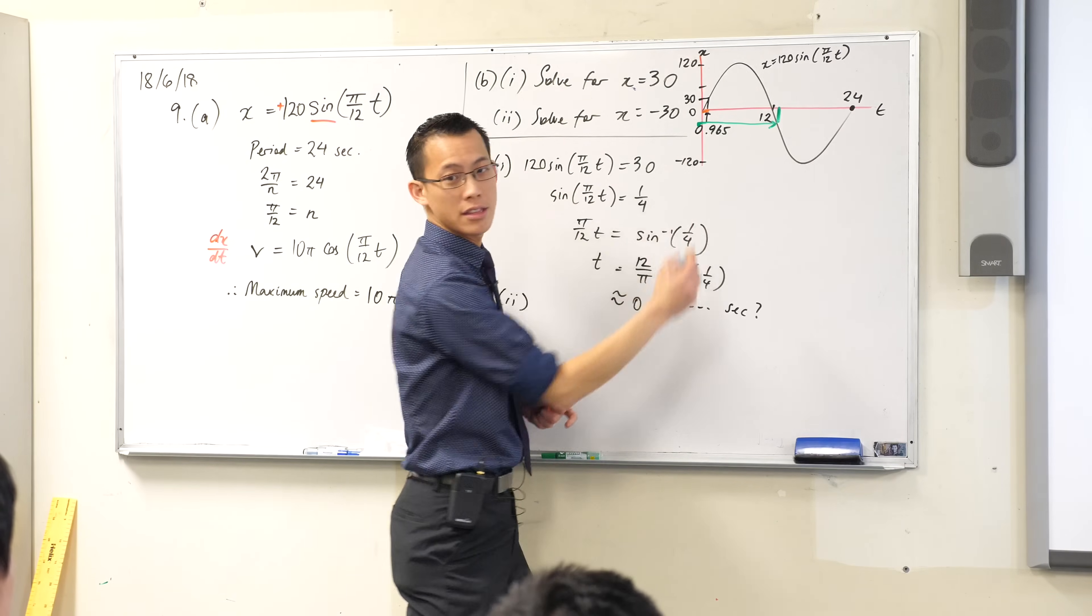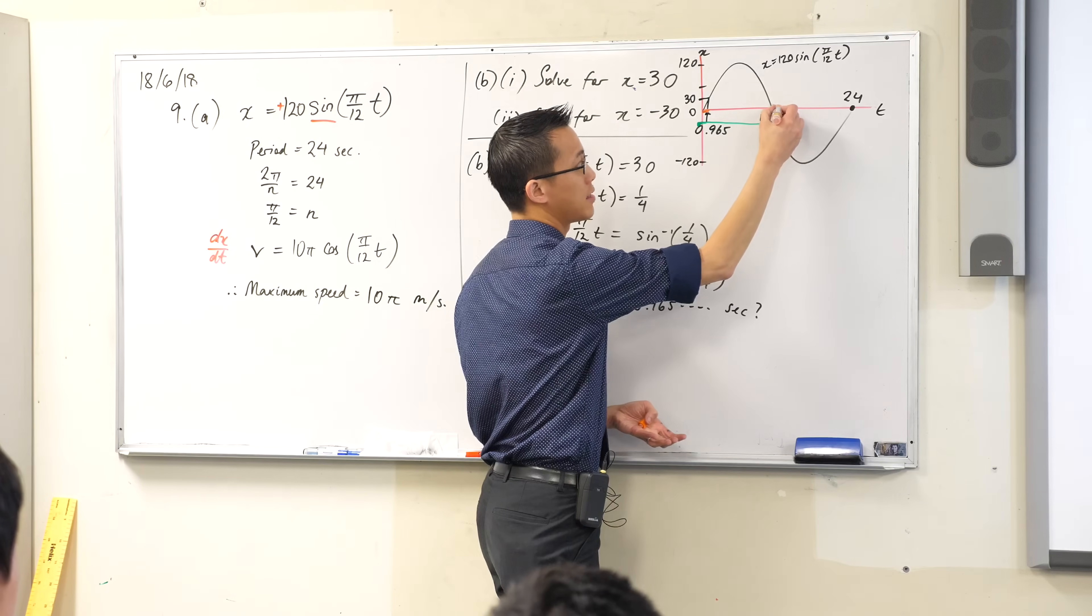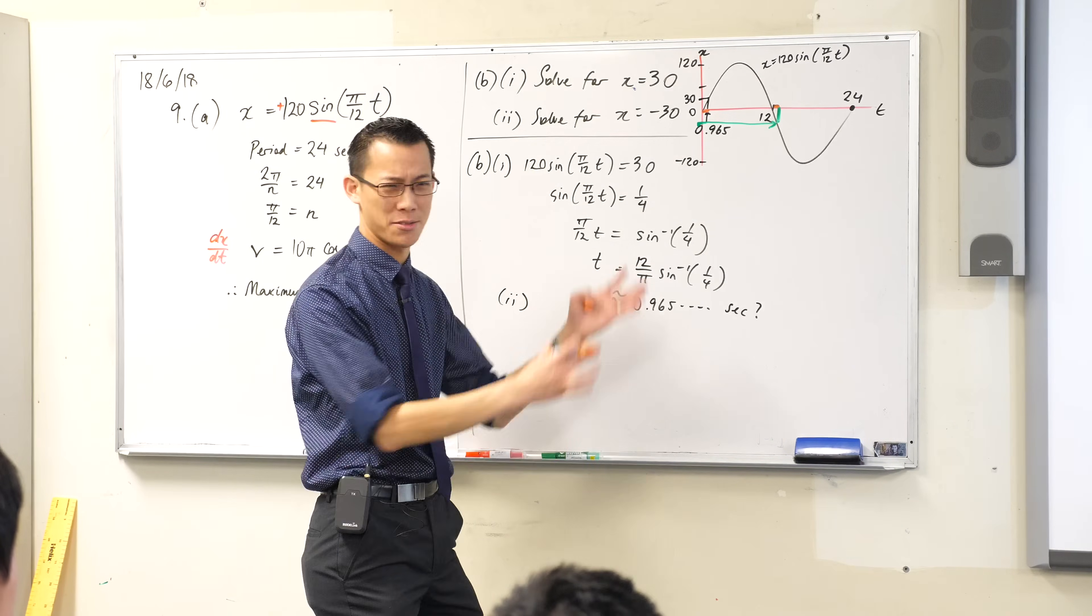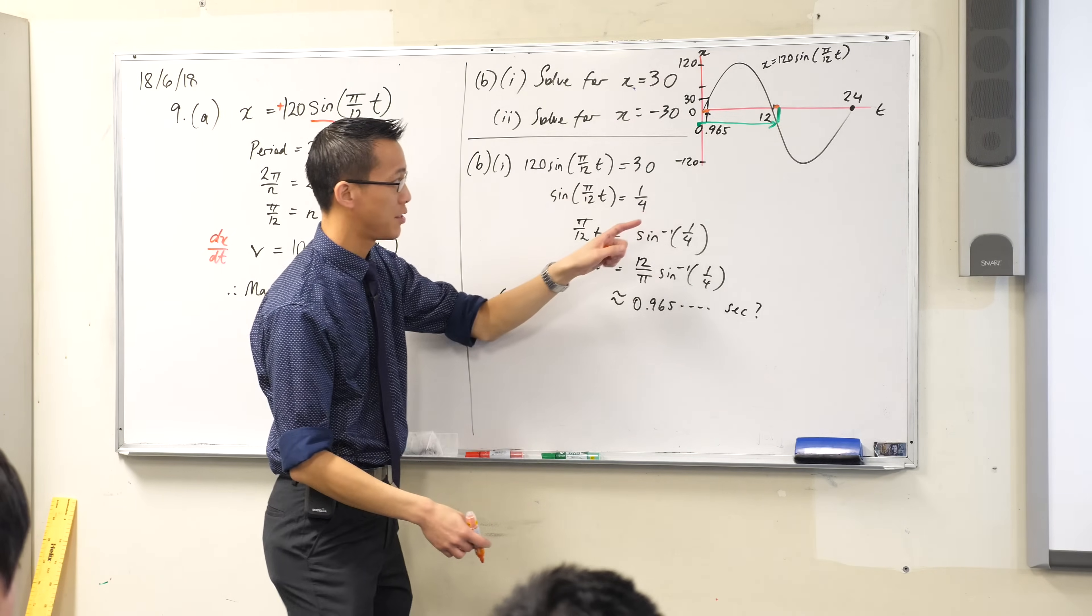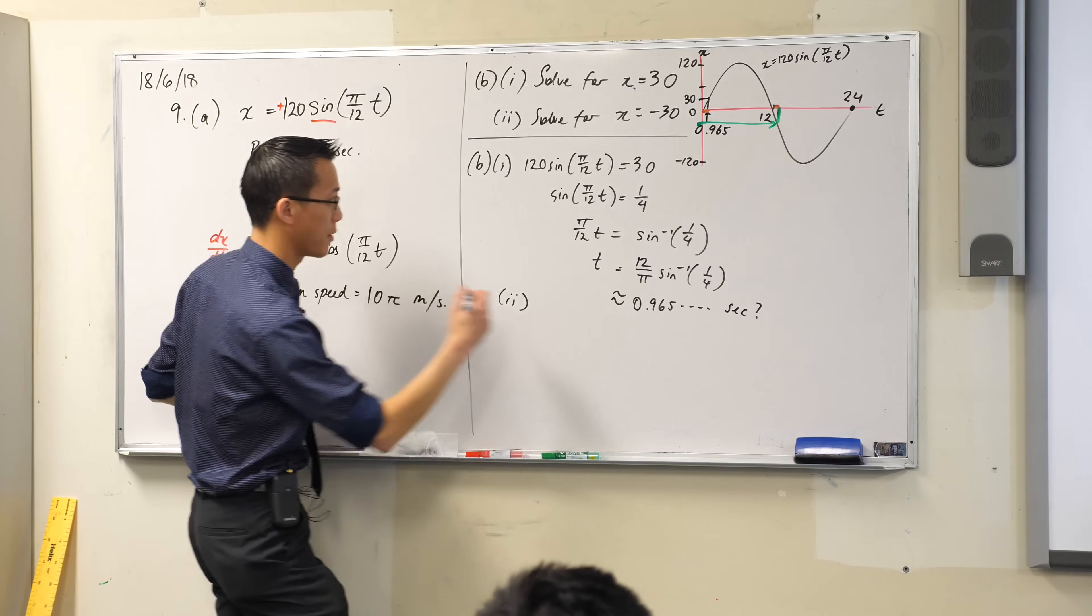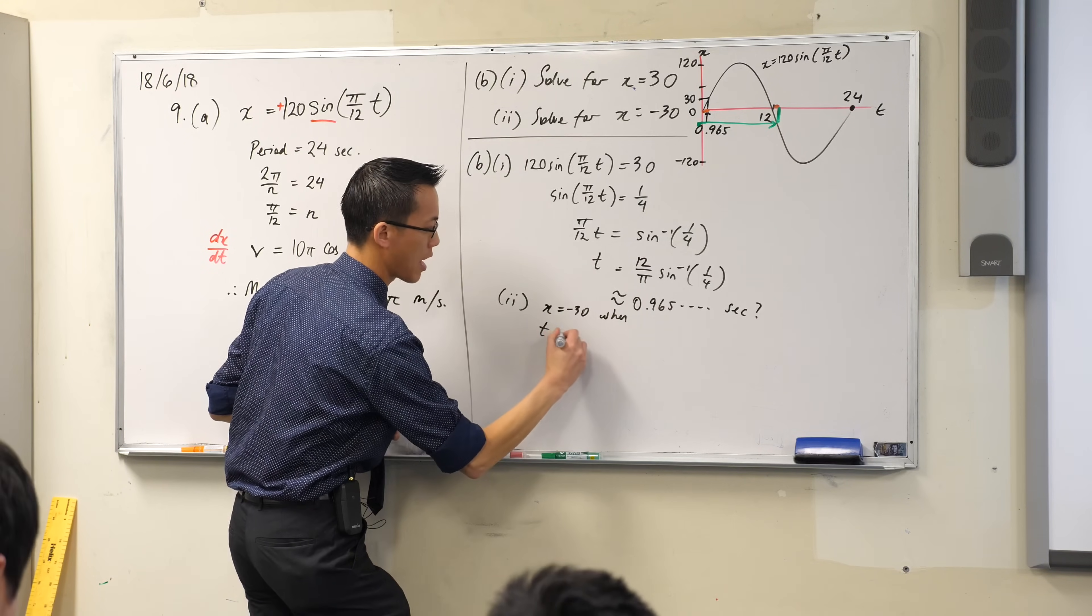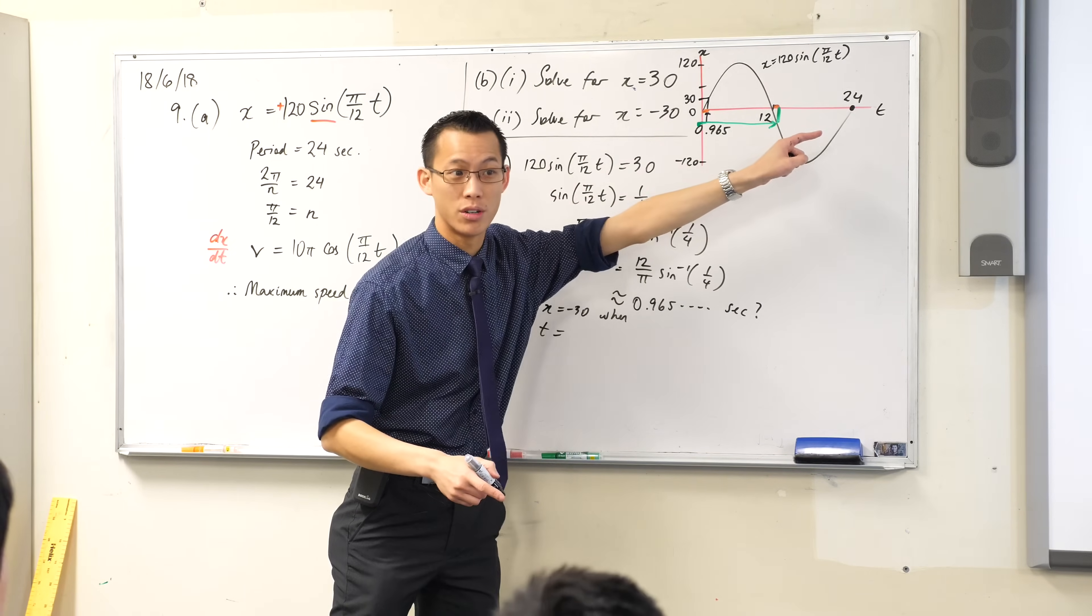See this little distance, the 0.965? You can clearly see it's mirrored in this distance here. There is all this symmetry around simple harmonic motion, which is why we like it so much. It's really nice to work with. So if those distances are the same, then to get to this new answer, x equals negative 30, sorry, x equals negative 30 when the time is equal to that time, 12 seconds forward. Does that make sense?